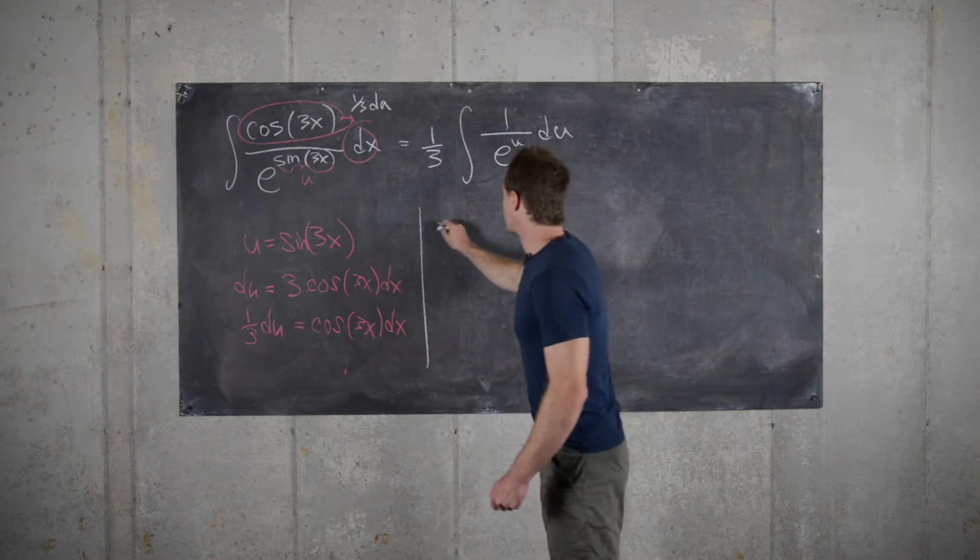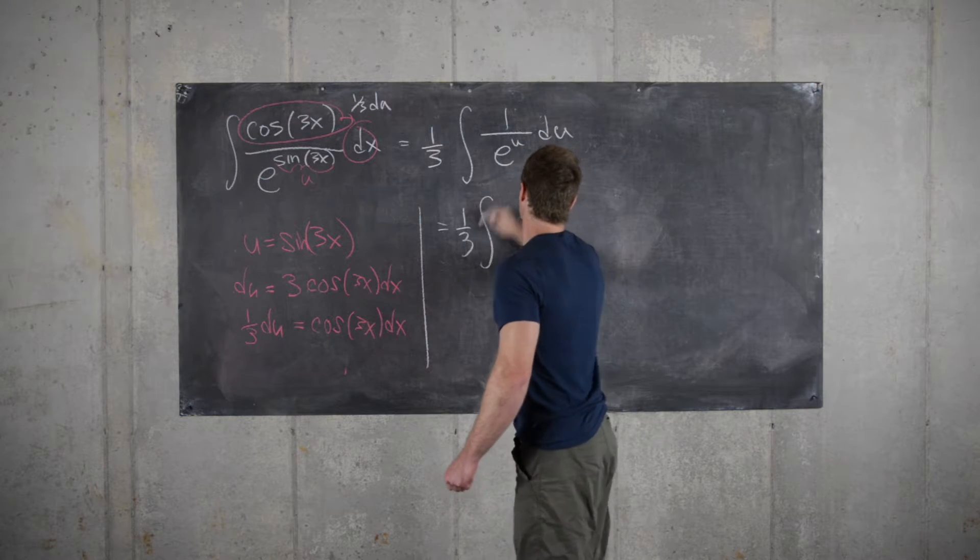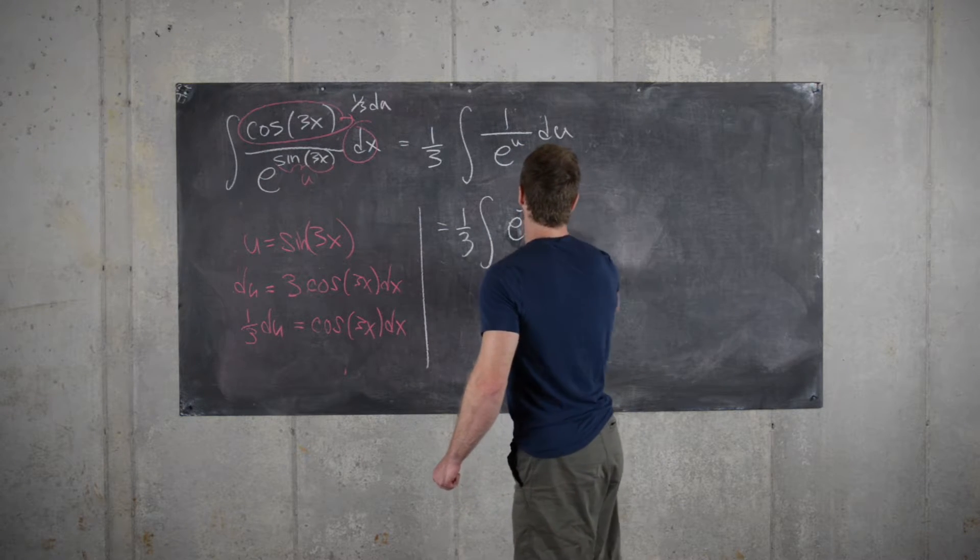But now we may want to rewrite this as follows to take the antiderivative. So this would be e to the minus u du.